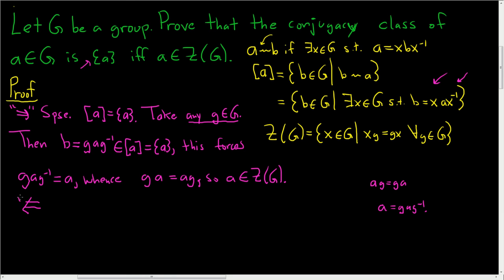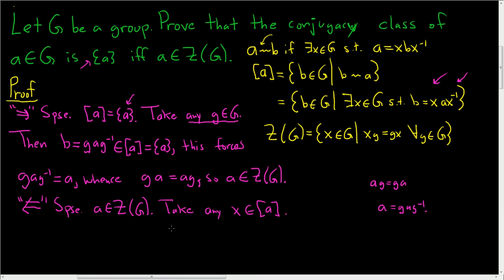Let's show the other direction. This should be easier. Suppose A is in the center of G. And the claim in this case is that the conjugacy class of A is equal to the singleton set containing A and A only. So take any X in the conjugacy class of A. And the claim is that X is equal to A. And that will show that every element of the conjugacy class must be A, so the conjugacy class must be the singleton.